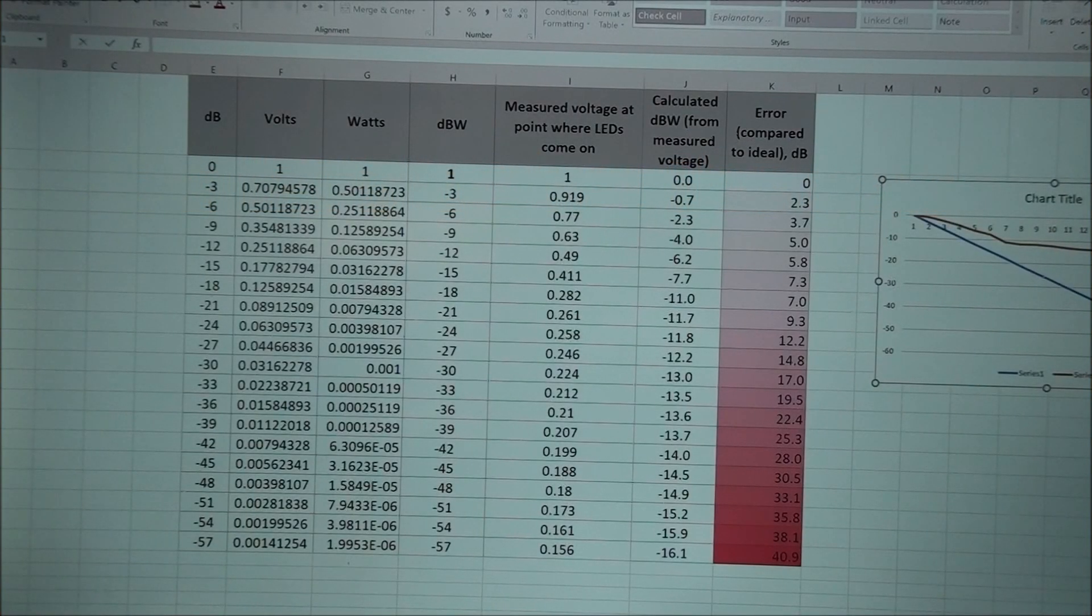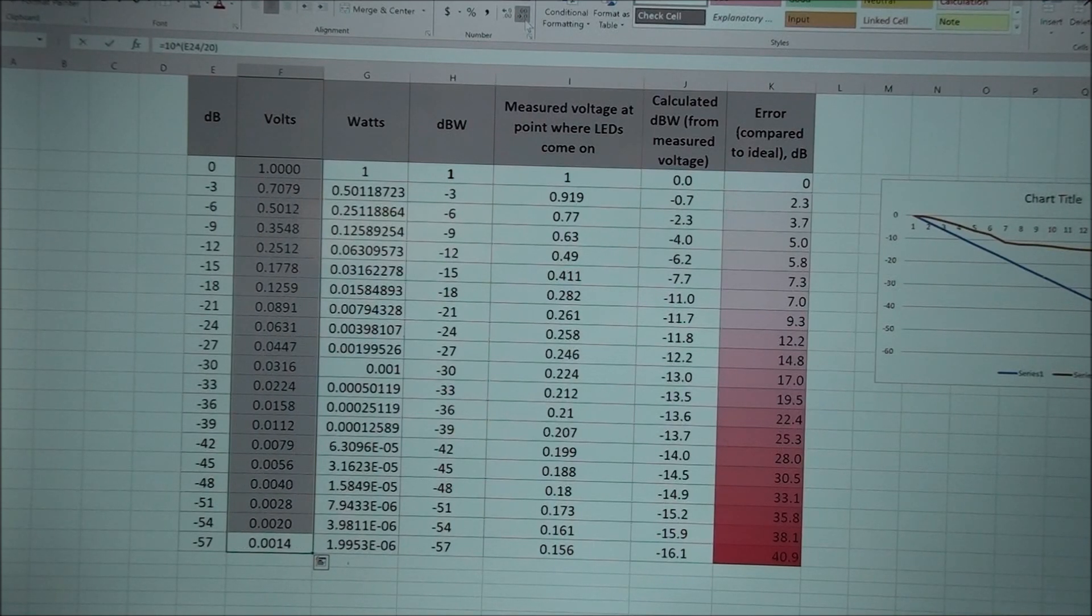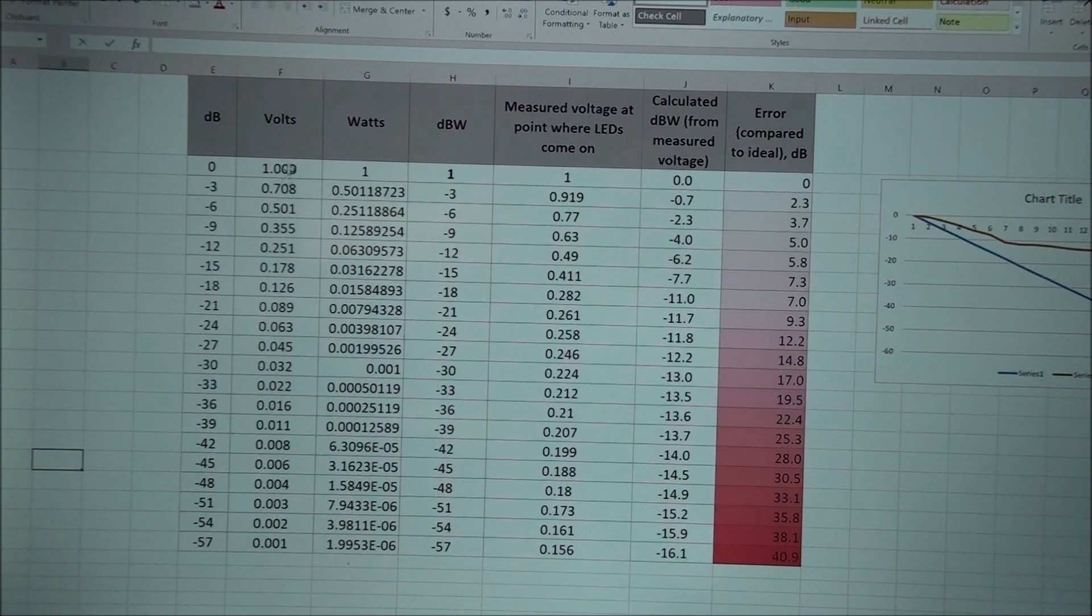Right now I have a spreadsheet that I put together that has all of the measurements that we did on the meter. This column here is just a listing that goes by three dB steps from zero down to minus 57 dB, that's what's on the front of that display. What I did here relative to one volt is I had the spreadsheet calculate in volts what it would be.